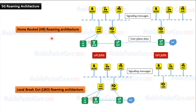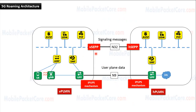In summary, there are two roaming architecture types. Home Routed roaming architecture, in which the UE in the visited network connects to the data network that exists in the home network of the UE. The SEPP is used at the edge of the visited network and at the edge of the home network in order to securely exchange signaling messages between the control plane in the visited network and the control plane in the home network. The interface between the visited SEPP and the home SEPP is named N32 interface. And the IPUPS mechanism is used by the UPF in the visited network and the UPF in the home network in order to securely exchange user plane data between the visited network UPF and the home network UPF.